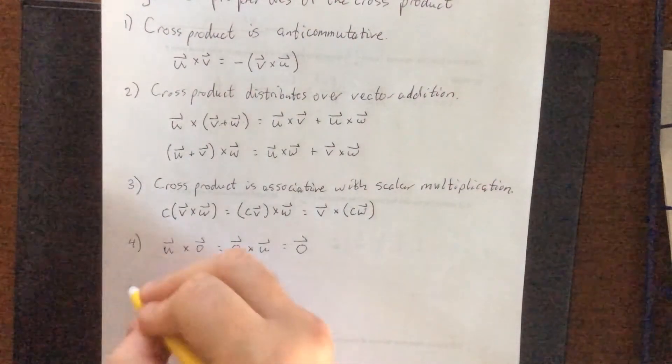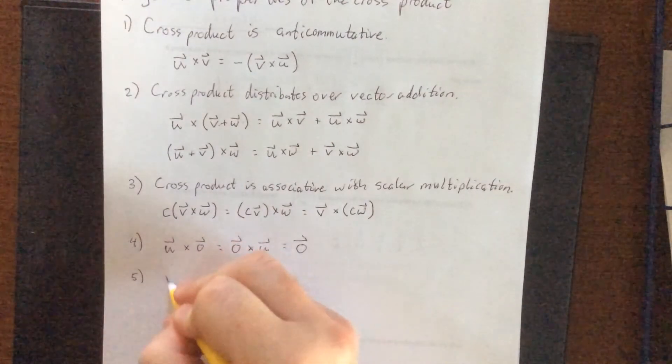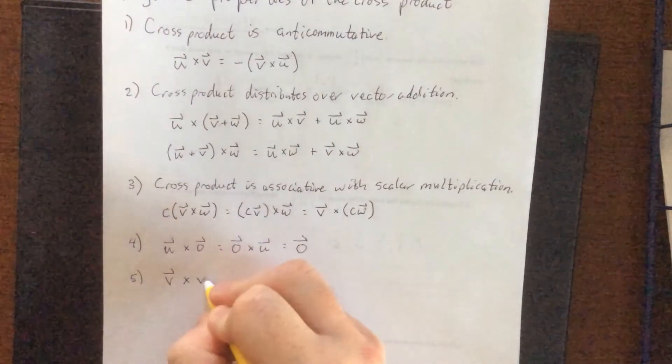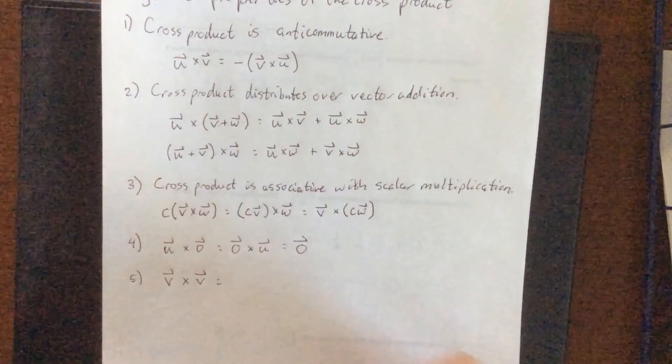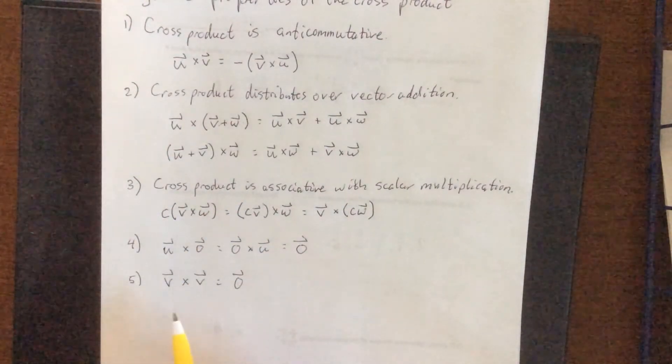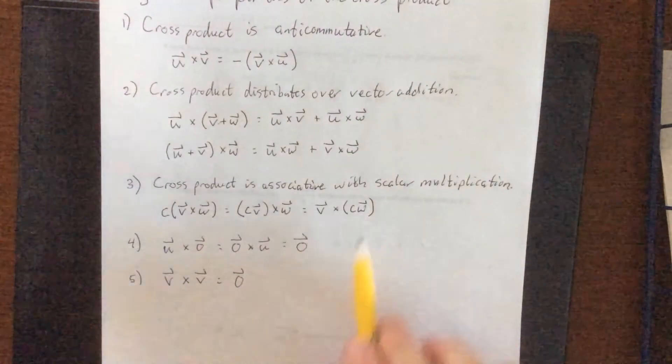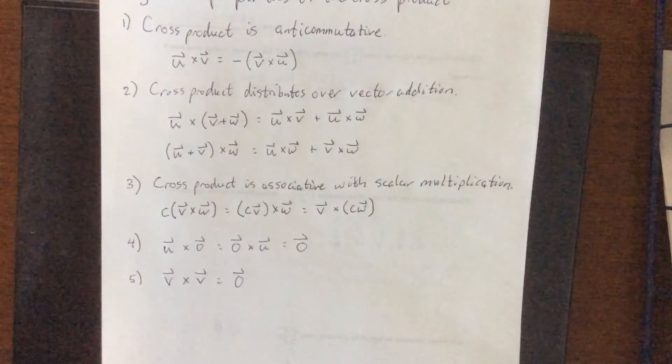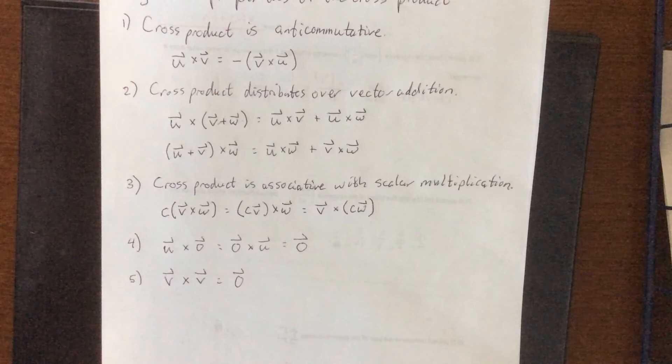Additionally, and this is kind of an interesting property, if I take the cross product of a vector with itself, I am going to wind up getting the zero vector. Now this is not just for itself, but if we combine this with the associative property, if we take the cross product of any two parallel or anti-parallel vectors, we are going to wind up with the zero vector.